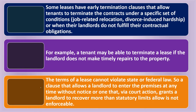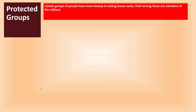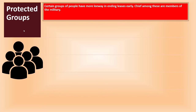The terms of a lease cannot violate state or federal law. For example, a clause allowing a landlord to enter the premises at any time without notice, or one that grants a landlord the ability to recover more than statutory limits allow via court action, is not enforceable. There are limits to what a lease can stipulate, and the lease only has power because it is enforceable under the law.